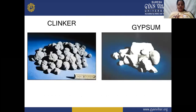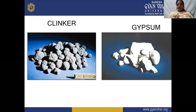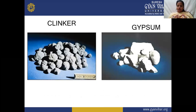The fine powder is mixed with gypsum at a percentage of 2 to 6%. The clinker — small rock materials — and gypsum are added to each other, ground to fine powder, and mixed very well.